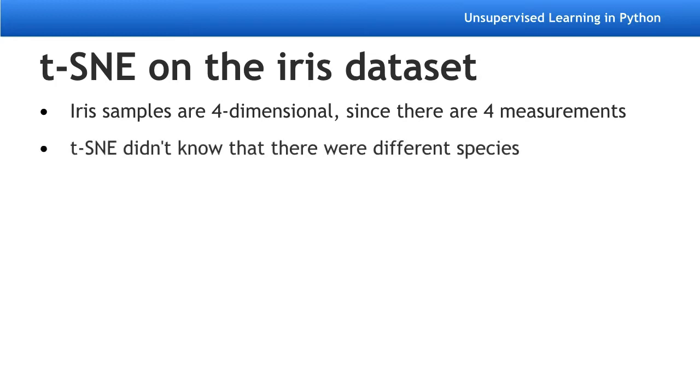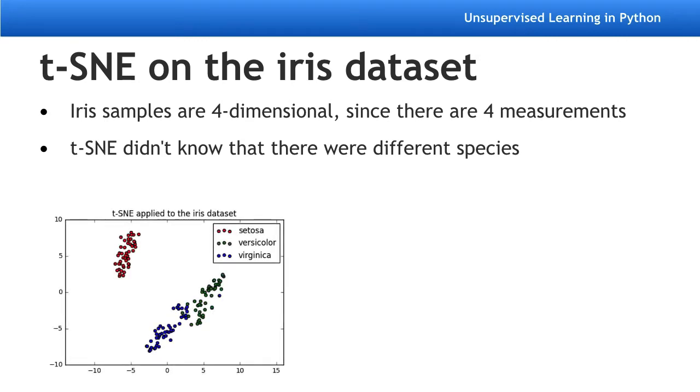Now t-SNE was only given the measurements of the iris samples. In particular, it wasn't given any information about the three species of iris. But if we color the species differently on the scatter plot, we see that t-SNE has kept the species separate.